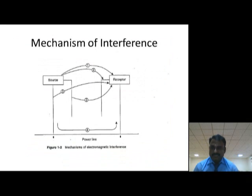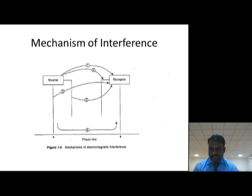This is the basic mechanism of interference. This mechanism represents how interference travels from source to receptor. The source is the origin of the interference, and nearby equipment that gets affected are called receptors — the victim. There are four different paths interference takes to reach from source to receptor. Path one is direct radiation from source to receptor — radiated emission. Path two is direct radiation from source to the cable of the receptor — conducted emission.